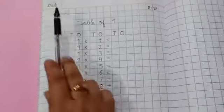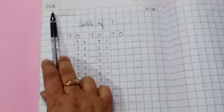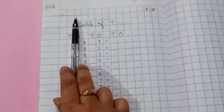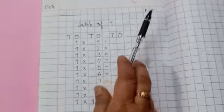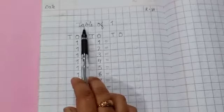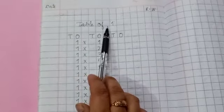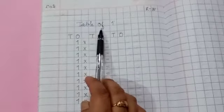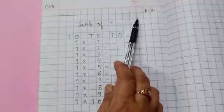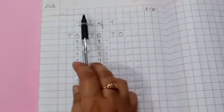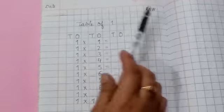So, before starting do mention today's date, day, r.w. that is revision work, and heading table of 1. When you mention the heading, leave one box. Leave one line, you have to leave one line after writing day and r.w.